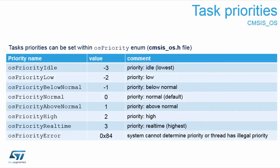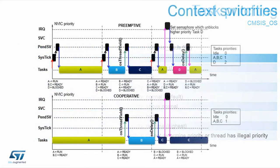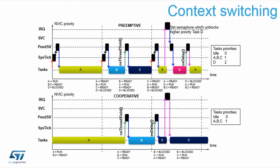There are system-defined priorities: idle priority with value minus three, then low, below normal, and normal up to zero, and above normal up to real-time with value three. You can also define your own priorities. There is a special value 'priority error' as well. With preemptive mode there are many more task switches, consuming slightly more CPU resources.